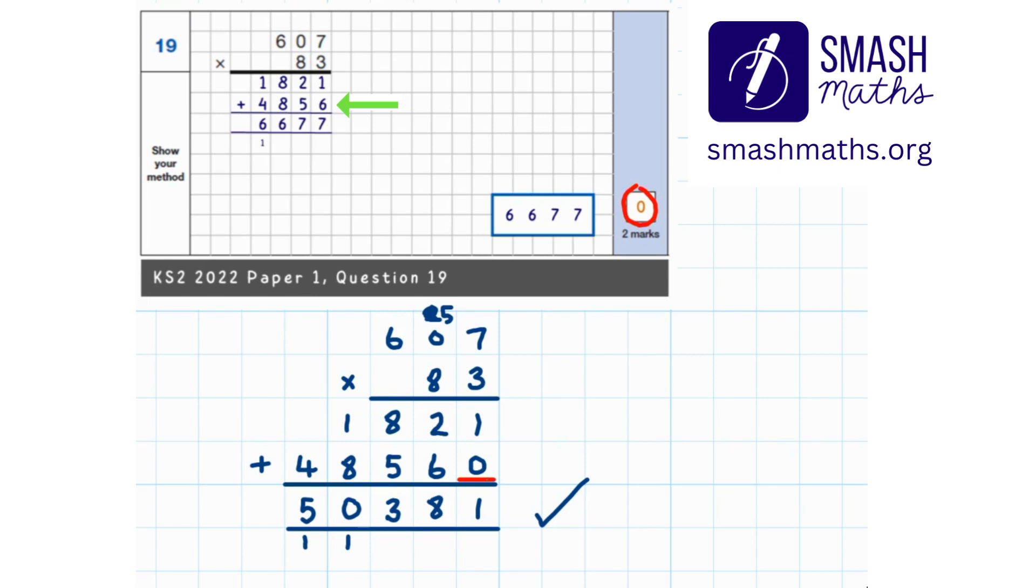So please remember, when you're multiplying by a two-digit number, don't forget that zero.